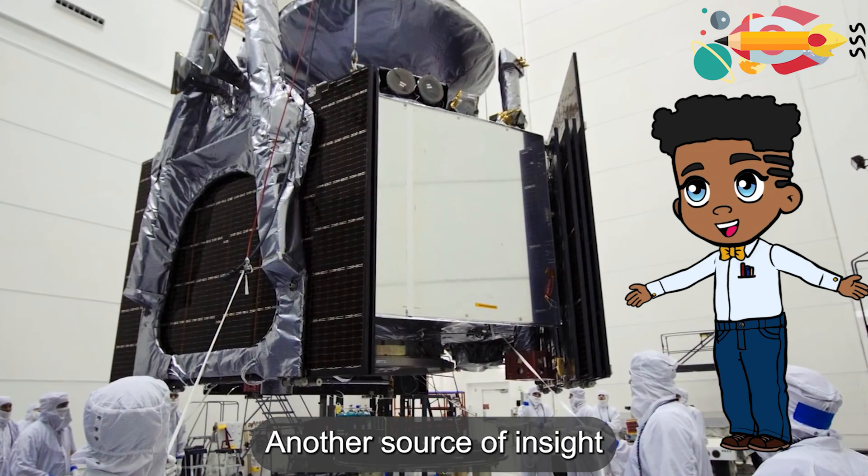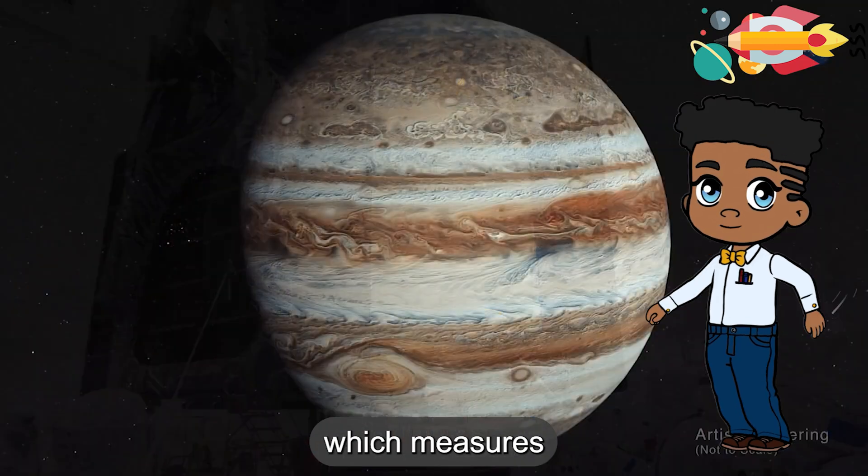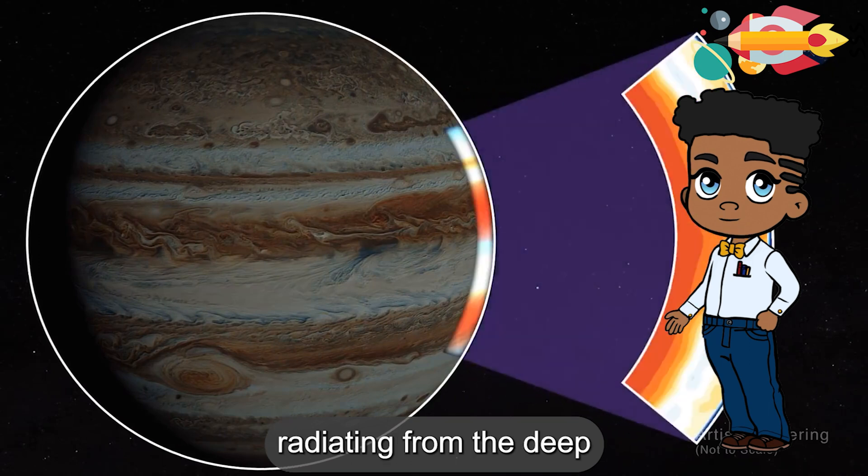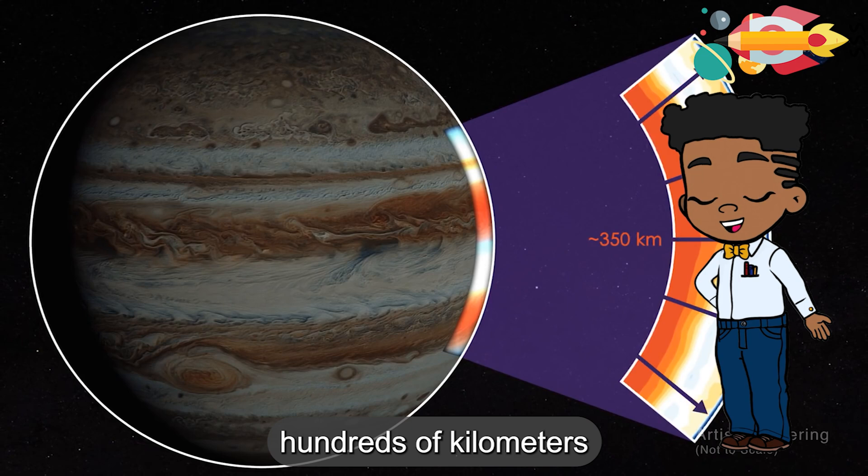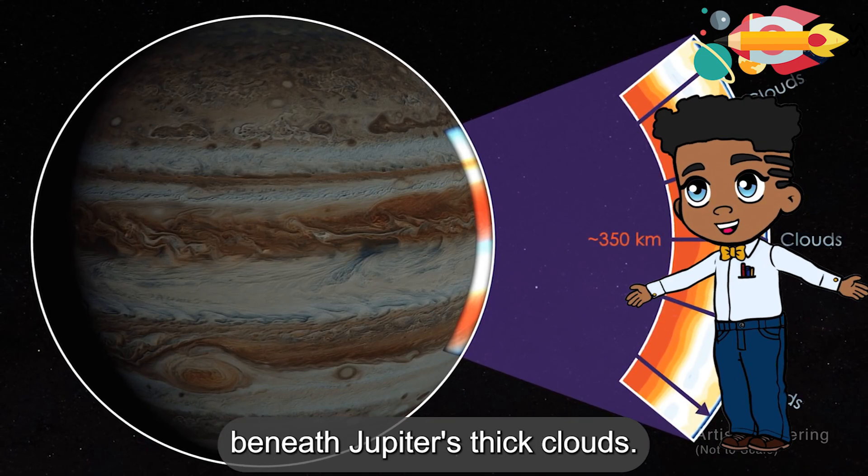Another source of insight is Juno's microwave radiometer, which measures thermal microwaves radiating from the deep recesses of the planet, revealing structure hundreds of kilometers beneath Jupiter's thick clouds.